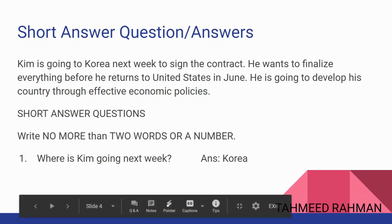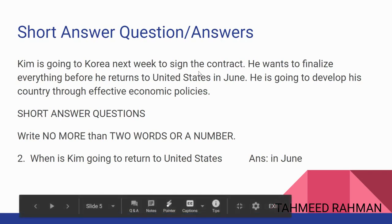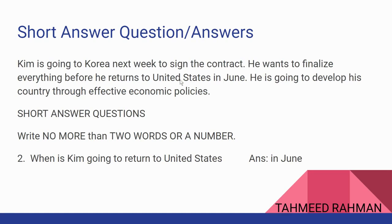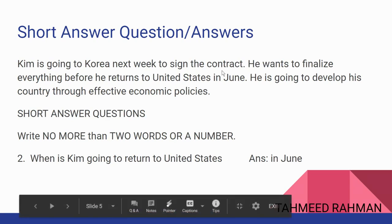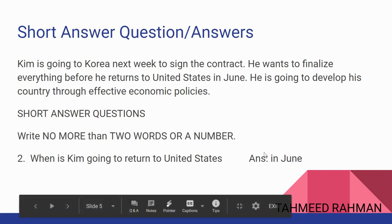The next question is: when is Kim going to return to the United States? From the text, he wants to finalize everything before he returns to the United States in June. So he is going to return in the month of June. Since they asked for the timing, simply write down 'June.'